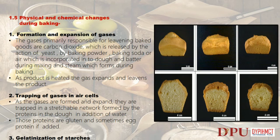Trapping of gases in air cells: as the gases are formed and expand, they are trapped in a stretchable network formed by proteins in the dough in the presence of water. Those proteins are gluten and sometimes egg protein if added. Gelatinization of starches: the starches absorb moisture, expand and become firmer; this contributes to structure and gelatinizes at 65 degrees Celsius.